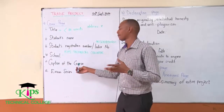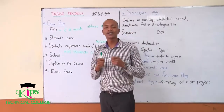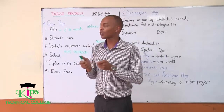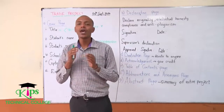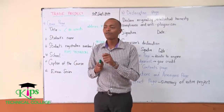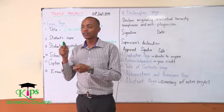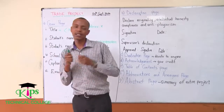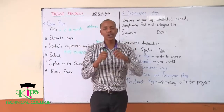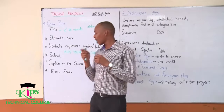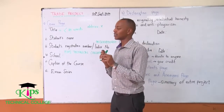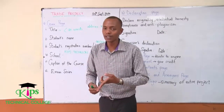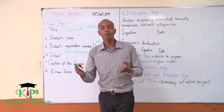For the course caption, you say that this is a trade project written to the Kenya National Examination Council in partial fulfillment for the award of a diploma or a certificate — in hospitality, banking and finance, food and nutrition, and so on. You have to caption it and say it is submitted to KNEC for the partial fulfillment for the award of a diploma or a certificate.